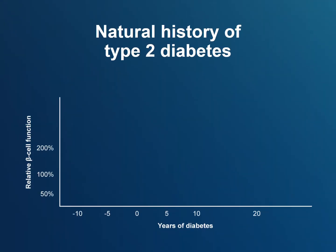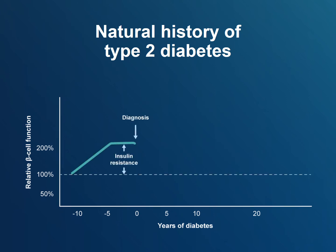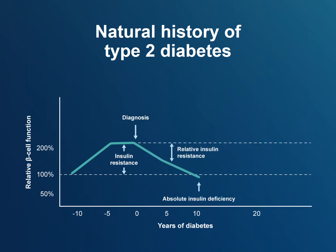Type 2 diabetes develops as a result of insulin resistance, where muscles, fat, and liver cells do not respond well to insulin made by the body and cannot easily take up glucose from the blood. As a result, the pancreas has to work harder to make more insulin. However, the pancreas cannot keep up with the increased demands, and insulin production eventually falls, leading to relative insulin deficiency — when the pancreas cannot make enough insulin to maintain normal blood sugars in an insulin-resistant environment.